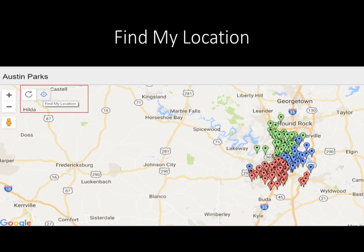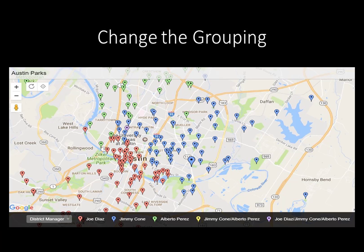The Find My Location feature uses the IP address or GPS to map where you are in relation to the location points on your map. Press the compass icon next to the Reset Map button, designated by a round arrow. The grouping may be changed in the final map by hovering over the gray box and clicking one of the sections from the list. The map is now grouped by district manager, and the balloon markers have changed to the corresponding color in the legend.